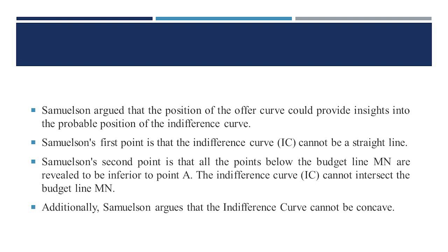In other words, if the indifference curve were a straight line like the budget constraint MN, it would imply that the consumer is equally satisfied with all combinations along the line, which may not align with typical assumptions about preferences. All the points below the budget line MN are revealed inferior to A, and therefore the indifference curve cannot intersect the budget line, nor could it be concave, as shown in the graph as PC.